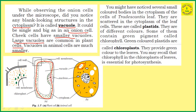Next, you might have noticed several small colored bodies in the cytoplasm of the cells of Tradescantia. They are scattered in the cytoplasm. These are called plastids.